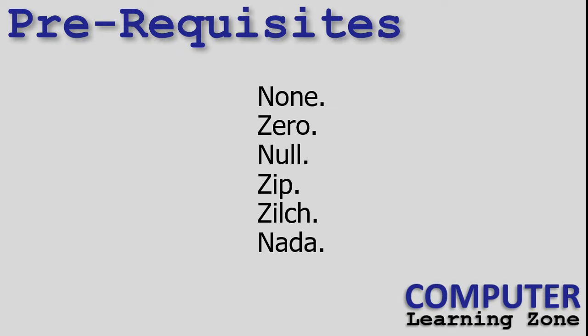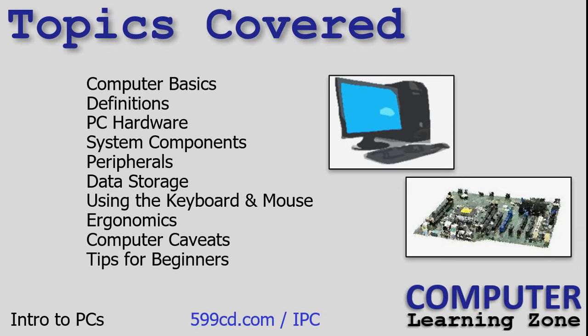There are no prerequisites for today's class. If you've never used a computer before, you'll be absolutely fine. Today's class is going to focus on the basics of computer technology. We'll learn some helpful definitions. We'll discuss computer hardware in detail, including system components, peripherals, data storage, and more. We'll learn all about how to use the keyboard and mouse, and what a lot of those crazy keys on the keyboard are. And finally, we'll talk about ergonomics, things to watch out for, and tips for beginners.